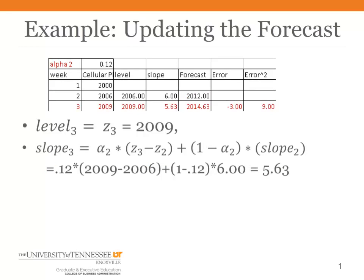Then in period 3 is where things change. The level for period 3 is still just what we observed, Z3. But the slope is going to be a weighted average of the current slope, which is Z3 minus Z2, and the old slope, which was slope sub 2.